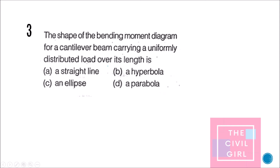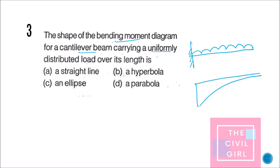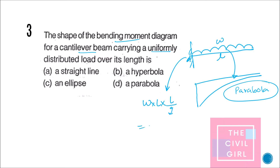Next question: what is the shape of the bending moment diagram for a cantilever beam carrying a uniformly distributed load? The answer is a parabola. The bending moment is M = w·l·(l/2) = wl²/2, so the power of l is 2 — power 2 means parabola, power 1 means a straight line, power 3 means a cubic curve. The answer is option D: parabola.